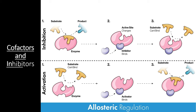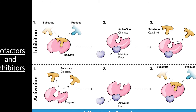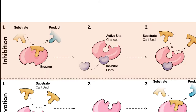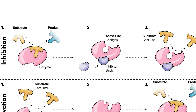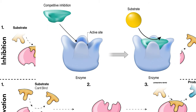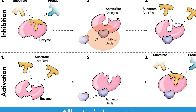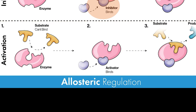Enzymes can be affected by cofactors and inhibitors — molecules that can either allow an enzyme to function, in the case of a cofactor, or stop the enzyme from functioning, in the case of an inhibitor. Enzymes can be inhibited by a number of molecules that stop the protein from either accepting the substrate or from undergoing a conformational change to catalyze the reaction. A non-competitive or allosteric inhibitor is a molecule that binds to the enzyme in a location other than the active site. By contrast, a competitive inhibitor is a molecule that stops an enzyme from functioning by literally blocking the active site. There are also molecules that can activate an enzyme — these are known as activators, cofactors, or coenzymes.